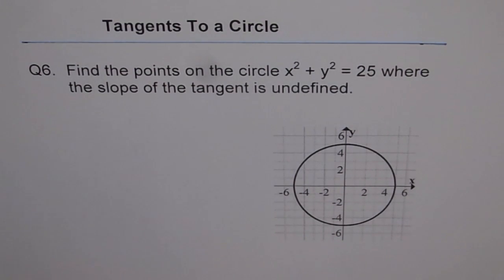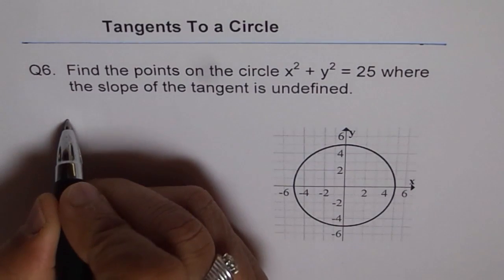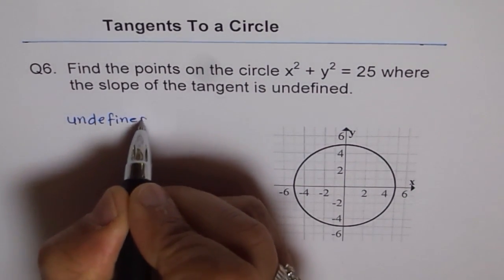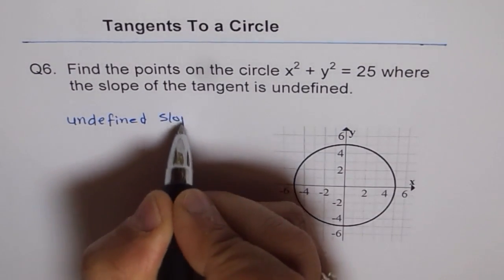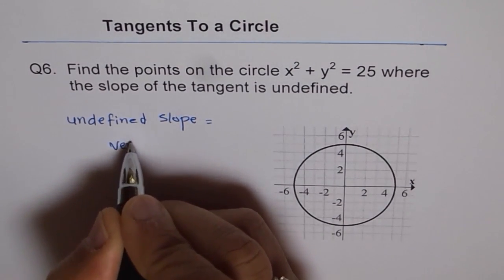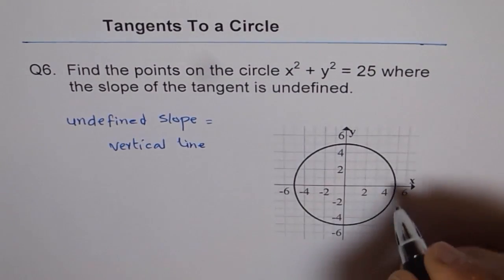So what is the meaning of undefined slope? When we say undefined slope, that means we are looking for a vertical line. Vertical line.